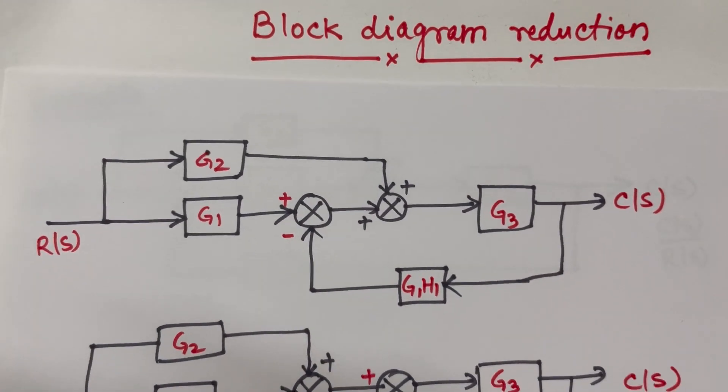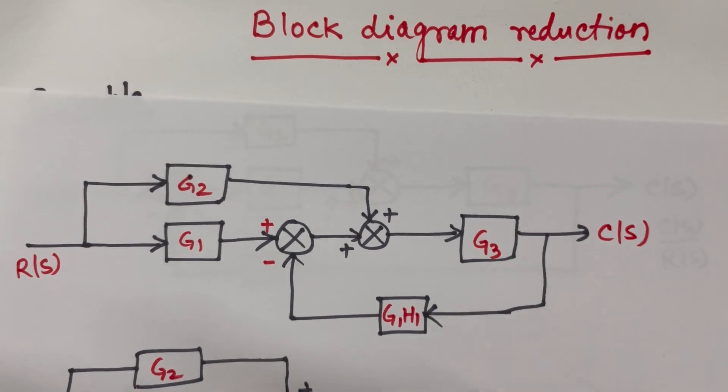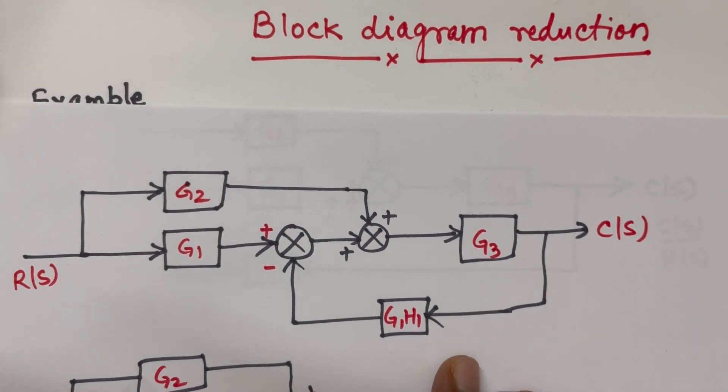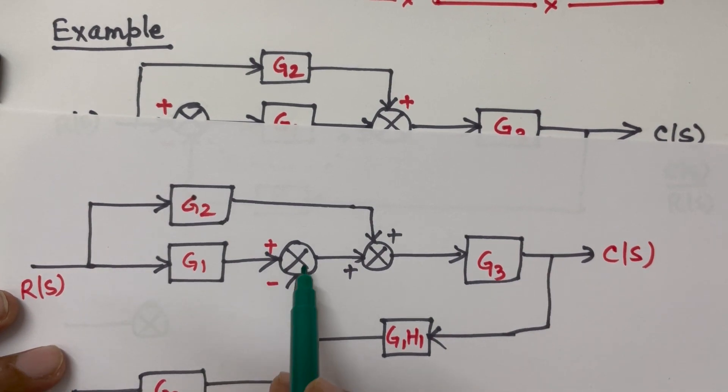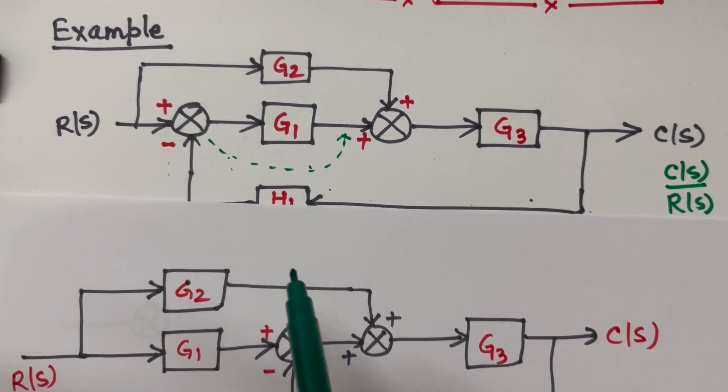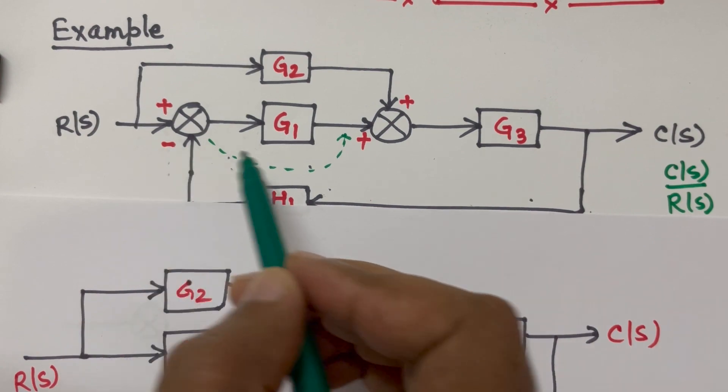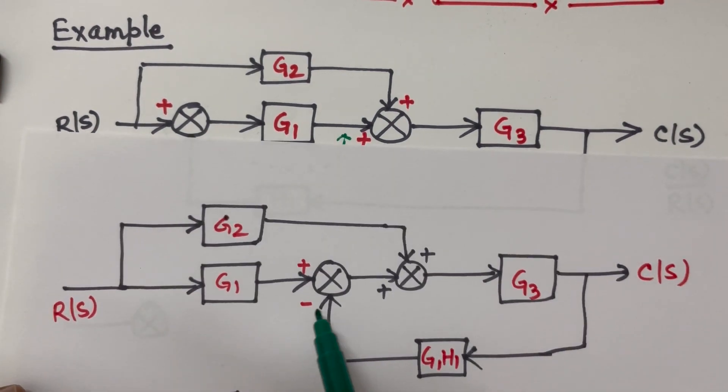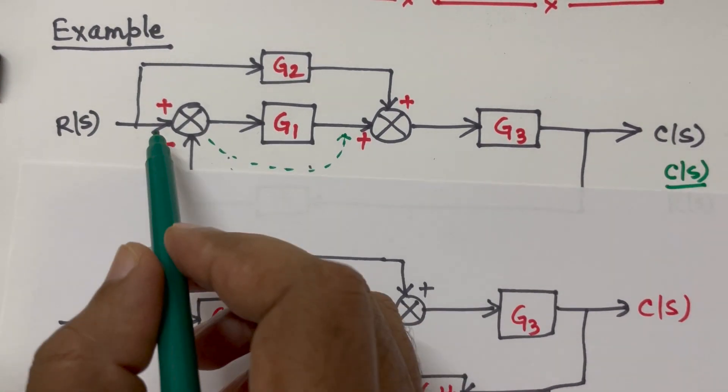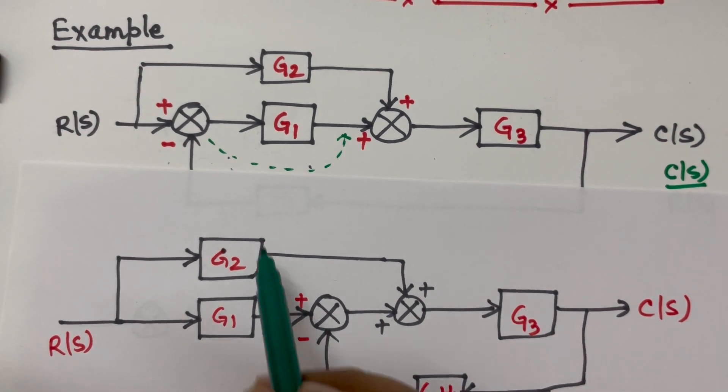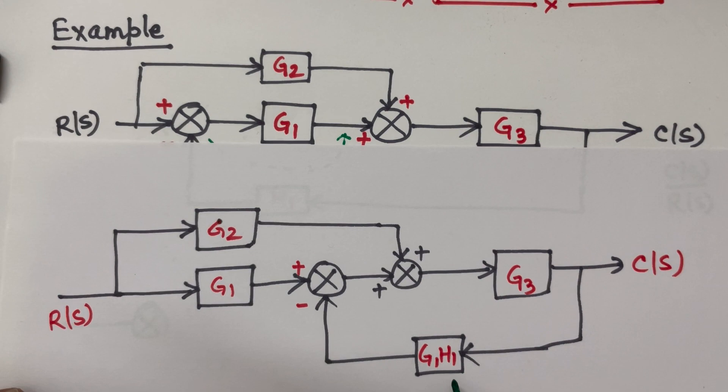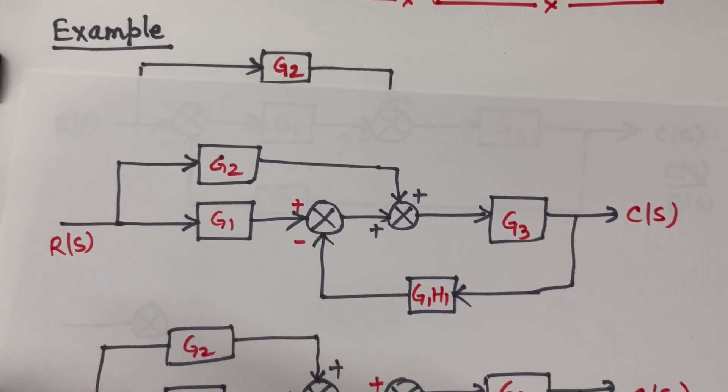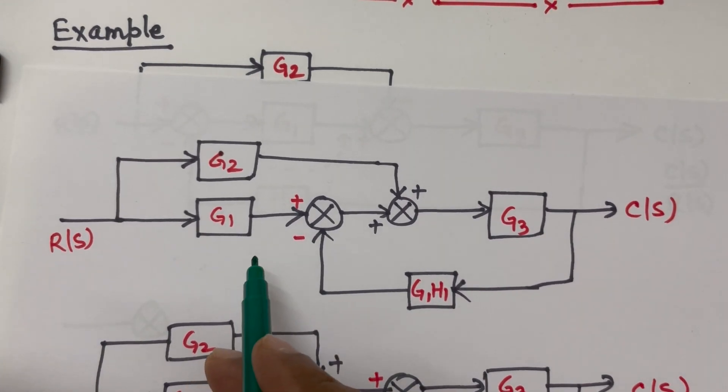So here we can see the transformed one - in this case the summing point has been shifted over here along with its negative sign. The H1 is changed to G1 H1. So this is our updated block diagram.